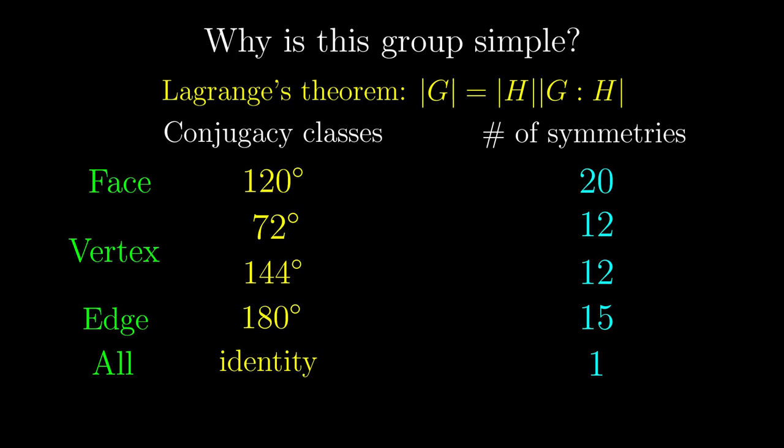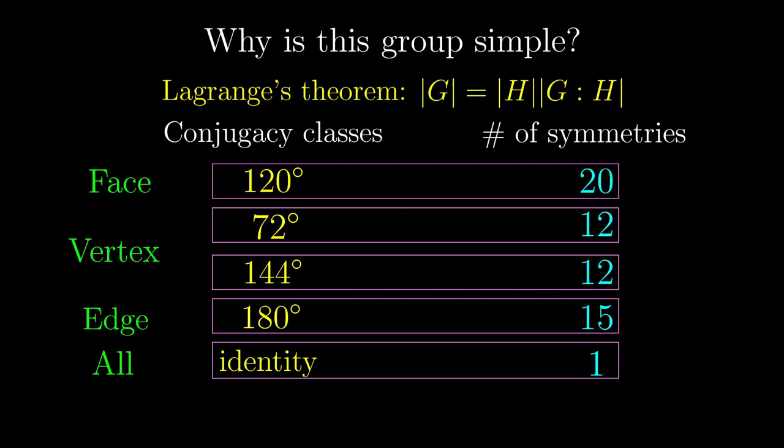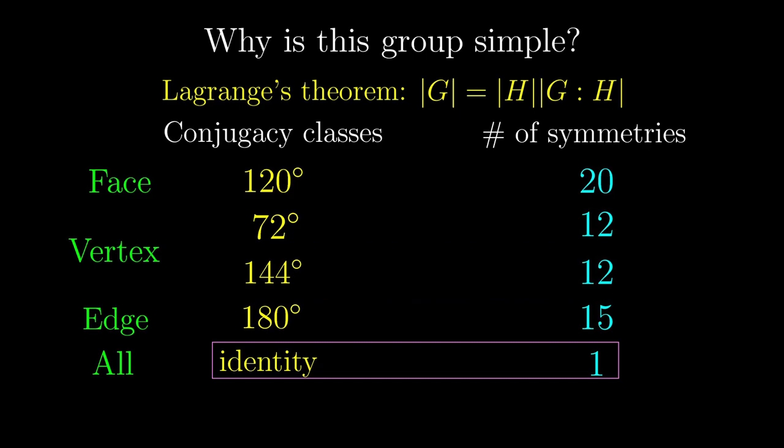So looking back at our table of conjugacy classes, it is now basically a number game. Why? Well, if we want a normal subgroup, just taking one thing from a conjugacy class would require us to take everything from it. Because a subgroup needs to include the identity, we have to take this conjugacy class.